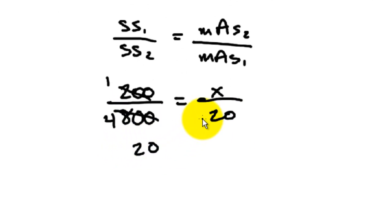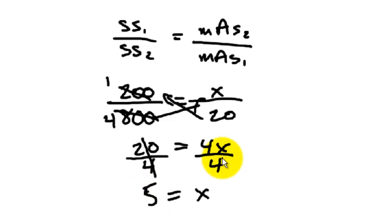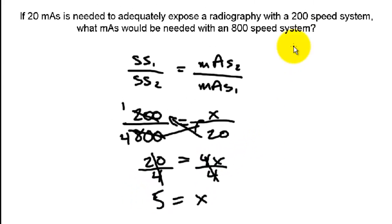And we get 20, multiplying this way, 20 equals 4X, divide both sides by 4, 5 equals your new mAs. So we do have a lesser value, and we know it's inversely proportional.